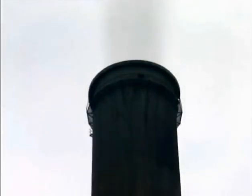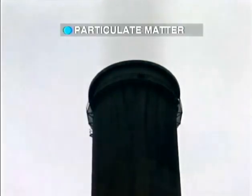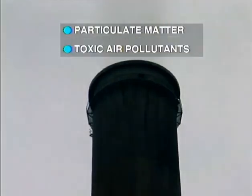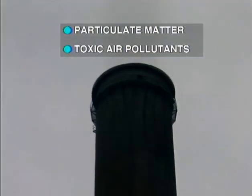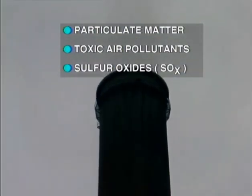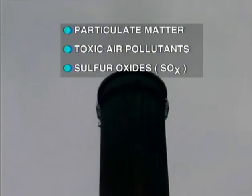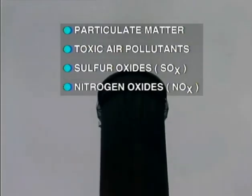But what are these pollutants and where do they come from? The source of most pollutants is in the fuel itself. The troublesome emissions contained in the flue gas include particulate matter, toxic air pollutants, sulfur oxides — that is SOX — and nitrogen oxides — that is NOX.